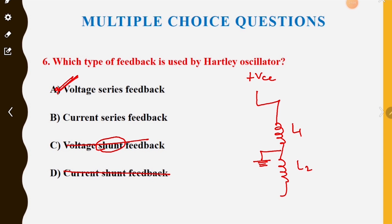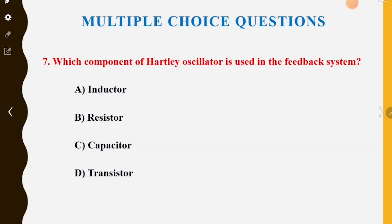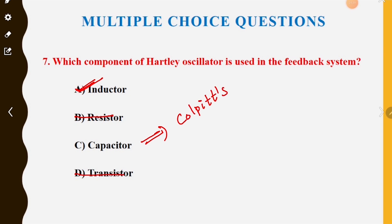Next MCQ: which component of the Hartley oscillator is used in the feedback system? Option A is inductor. In the Hartley oscillator, the inductor is used in the feedback system. The next MCQ follows.